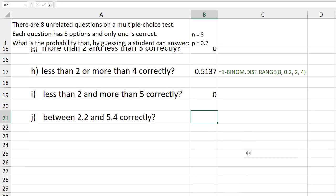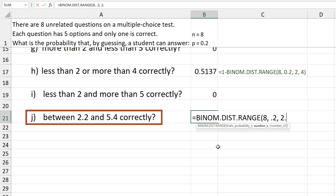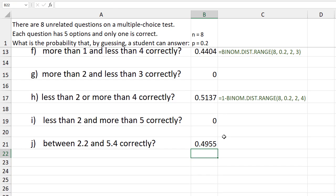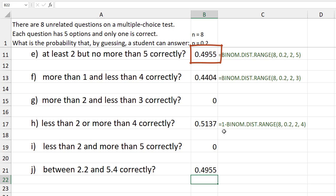Lastly for j, between 2.2 and 5.4. If you use these values as they are, Excel simply gets rid of the decimal part and returns the result from 2 to 5, as you can see up here. But that would be incorrect, since 2 is not included in the stated range.